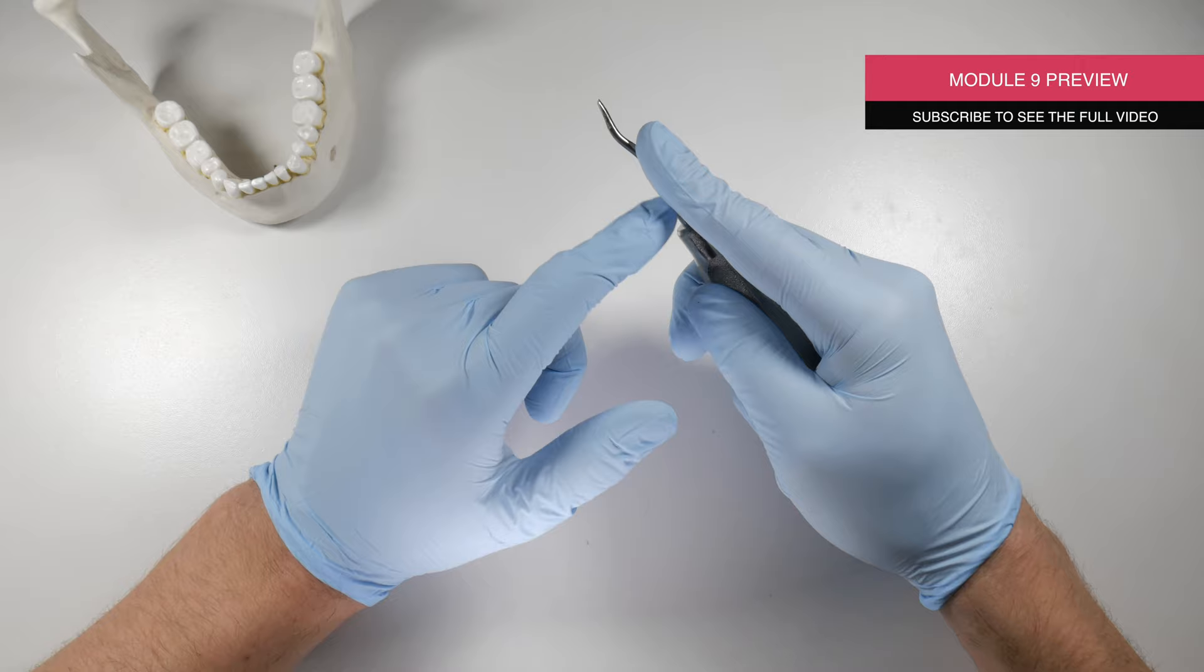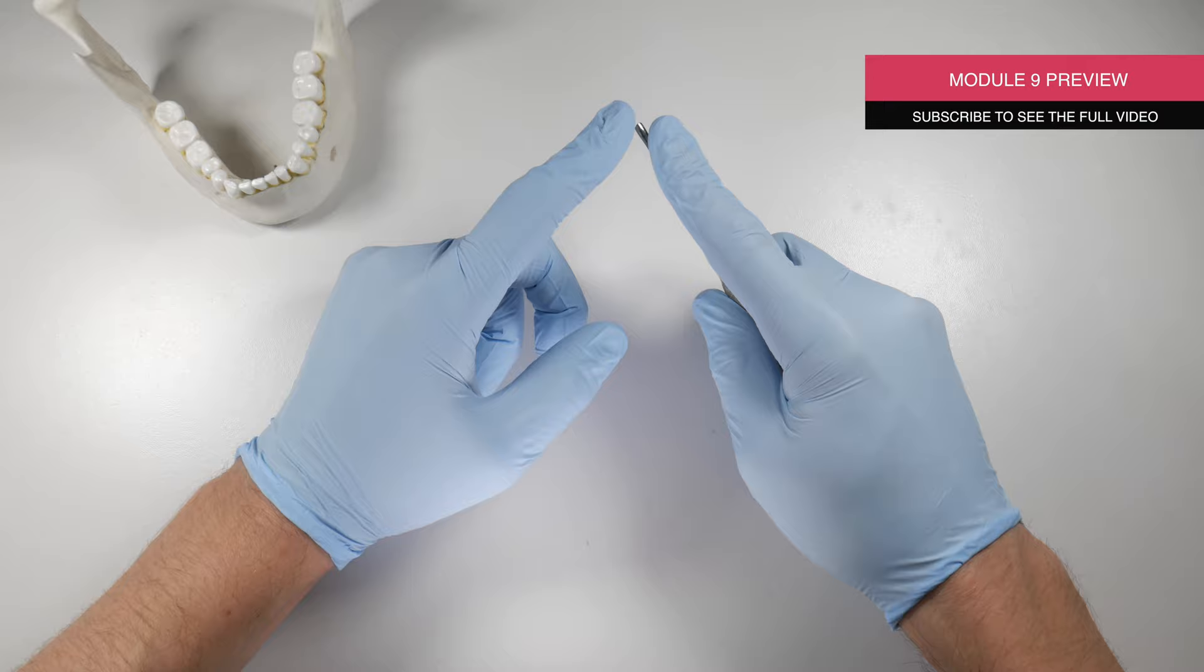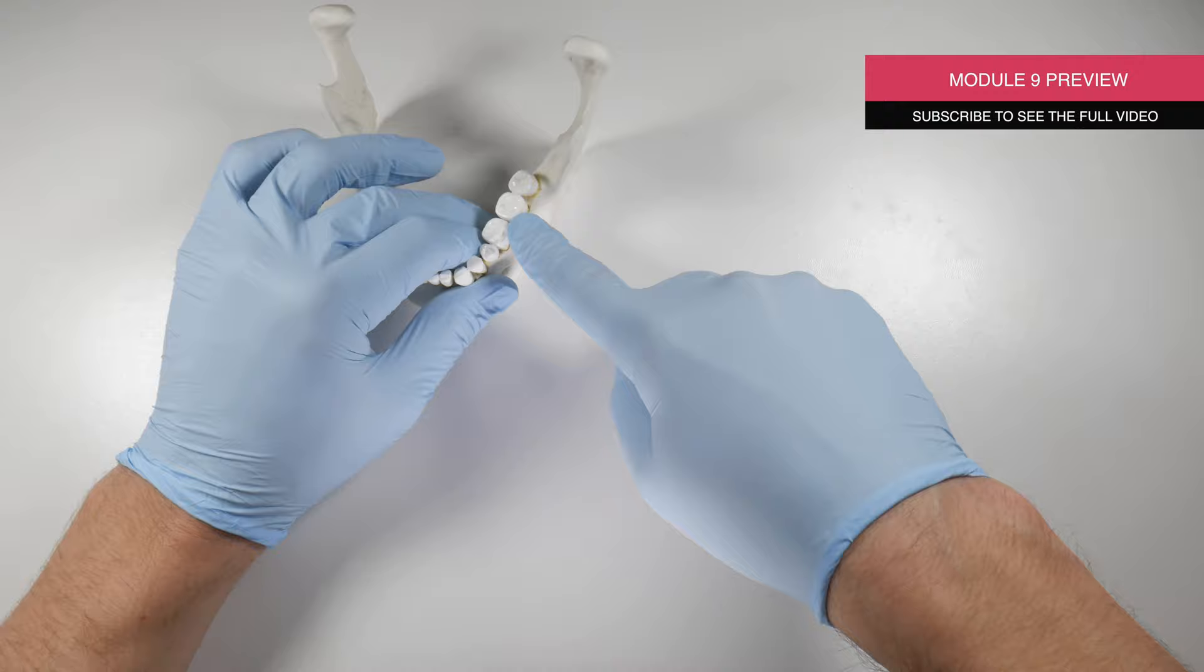The index finger will extend along the shank of the elevator and we're going to apply our finger near the tip of the elevator as a point of stability and a way to keep us from inadvertently slipping as we're elevating and poking or puncturing our patient.